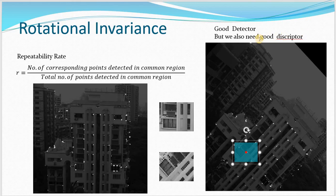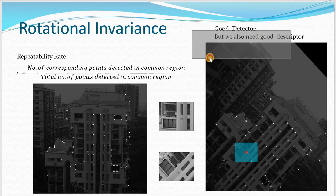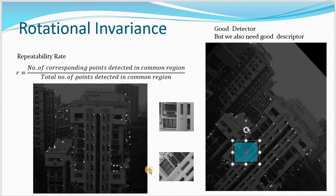So this is the problem. We also need a good descriptor. A descriptor means something that describes this particular feature well, so that even if it is transformed or rotated, I can still have some measure by which I can say both of these are the same. We need a good descriptor.